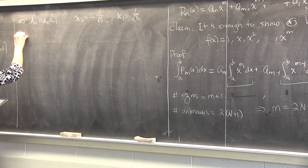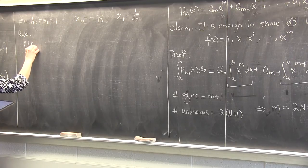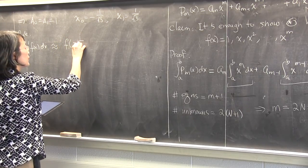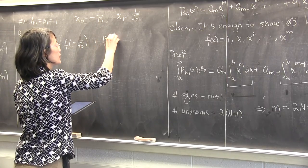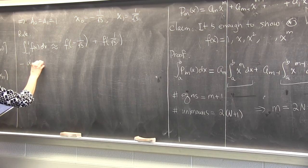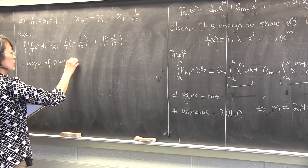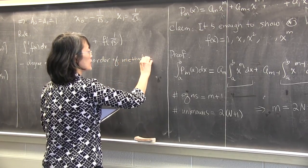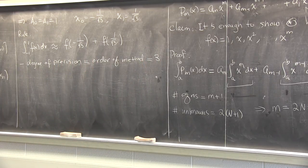Using the symmetry, a0 = a1 = 1, and from equation 3, x0² = 1/3, so x0 = −1/√3 and x1 = 1/√3. The final rule is: the integral from −1 to 1 of f(x)dx ≈ f(−1/√3) + f(1/√3). This is exact for all polynomials of degree m = 3 — it's a third-order approximation.